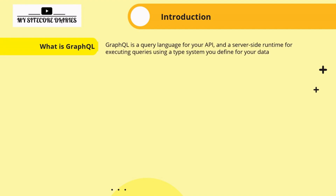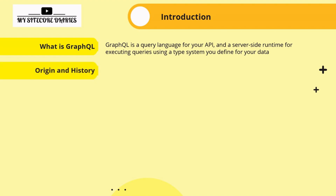What is GraphQL? GraphQL is a query language for your API and a server-side runtime for executing queries using a type system you define for your data. GraphQL is a powerful query language for your API and offers a server-side runtime that executes queries using a type system defined by your data. Essentially, you are querying data by writing queries in GraphQL.